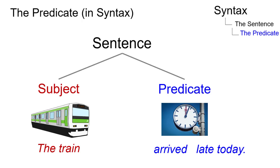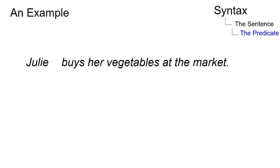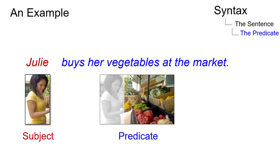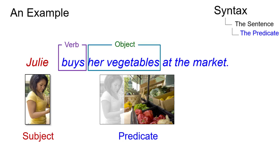In terms of clausal elements, the predicate may consist of a verb and different combinations of objects, complements and adverbials. In 'Julie buys her vegetables at the market', Julie is the subject, 'buys her vegetables at the market' the predicate, 'buys' the verb, 'her vegetables' the object, and 'at the market' an adverbial.